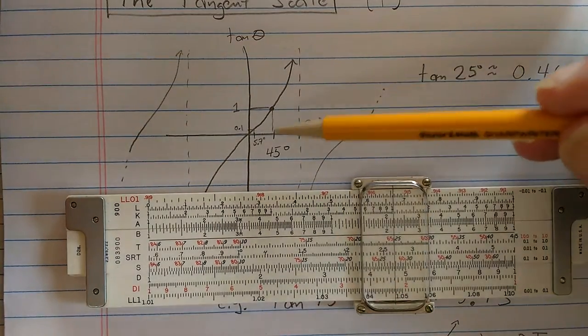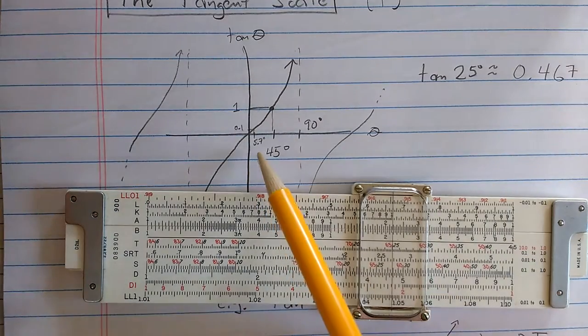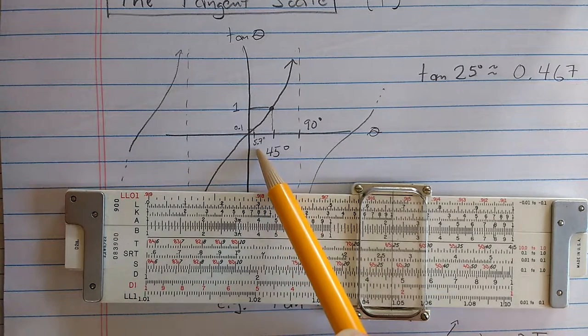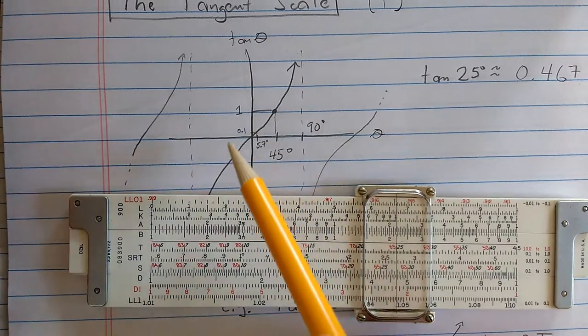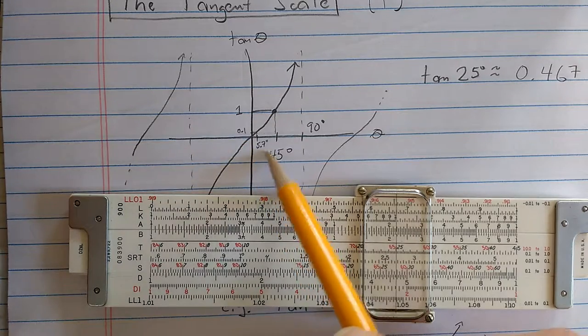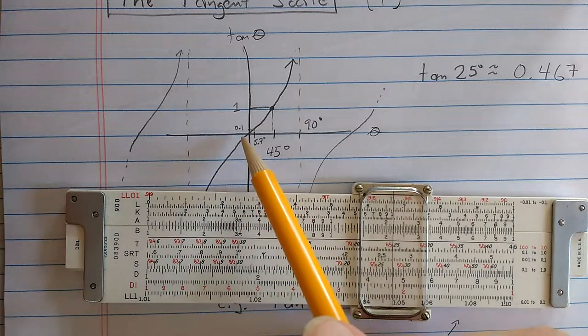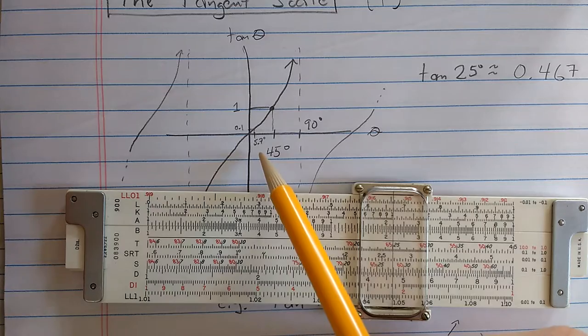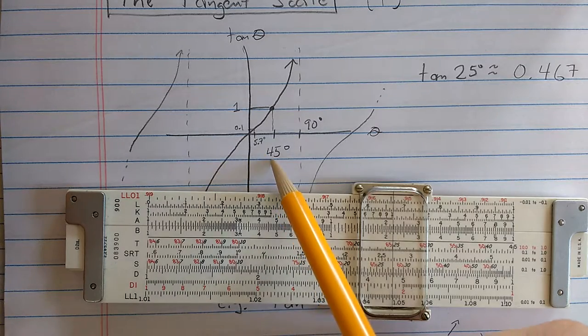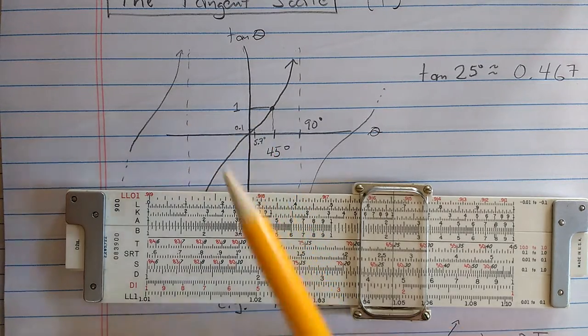Now here's a graph of the tangent function. We see if the angle is between approximately 5.7 and 45 degrees, then the tangent is between 0 and 1.